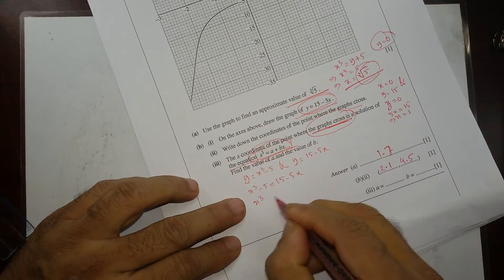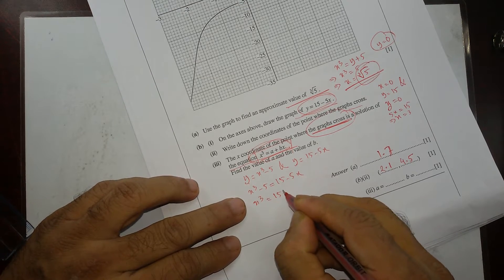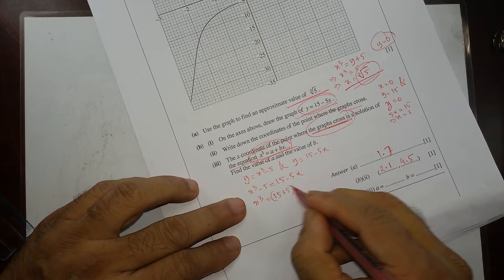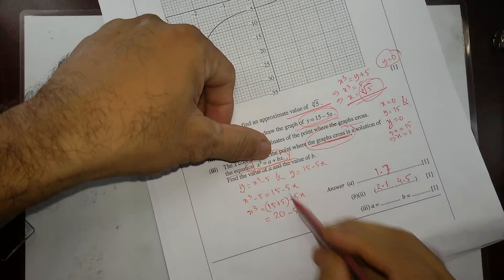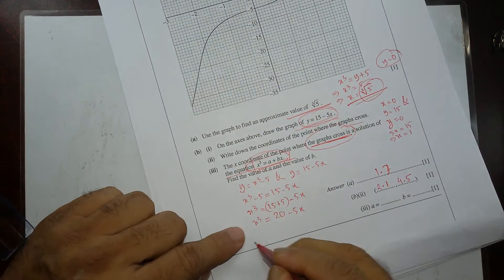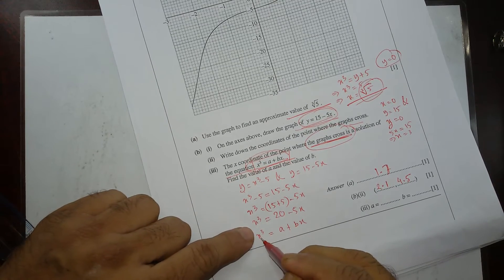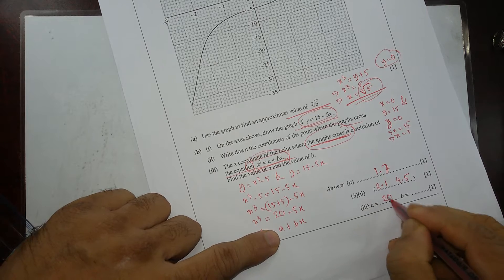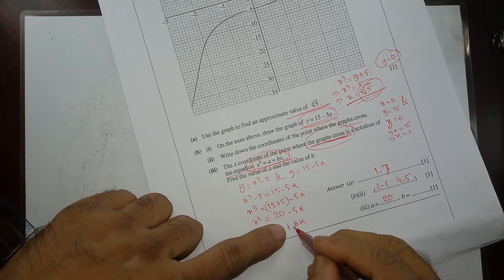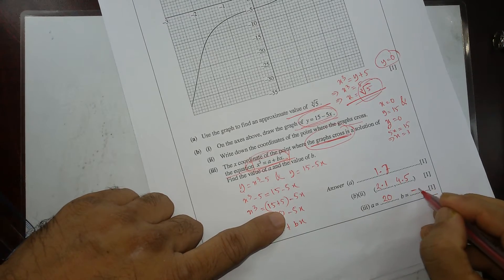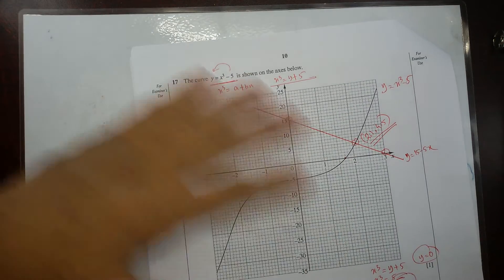So x cubed minus 5 equal to 15 minus 5x. Now I'm going to match this equation with the form x cubed equal to a plus bx. If I bring this 5 over here, it's going to be 15 plus 5, so x cubed equals 20 minus 5x. Comparing: a becomes 20, and b is minus 5. So a equals 20 and b equals negative 5.